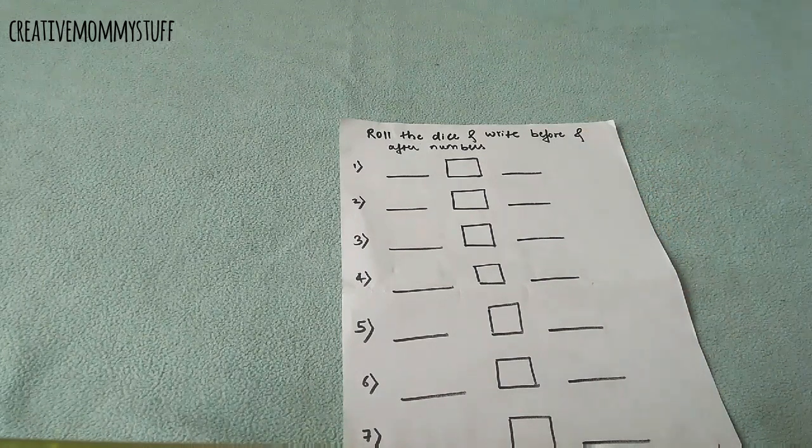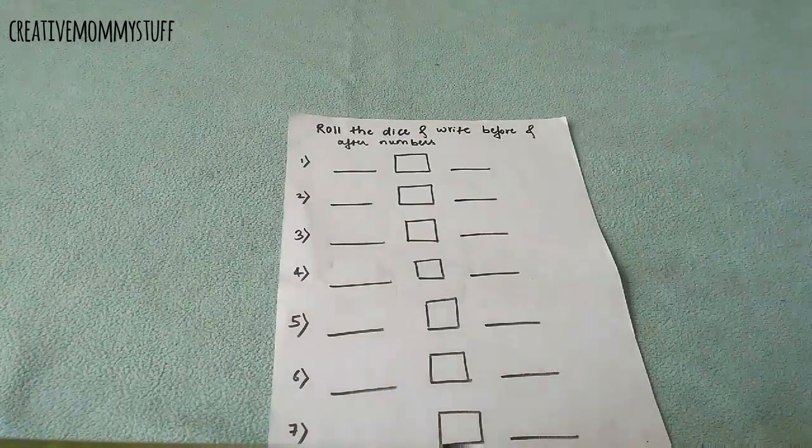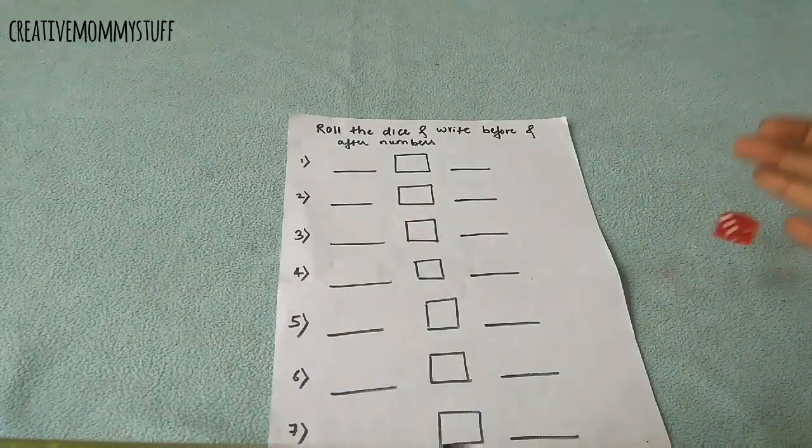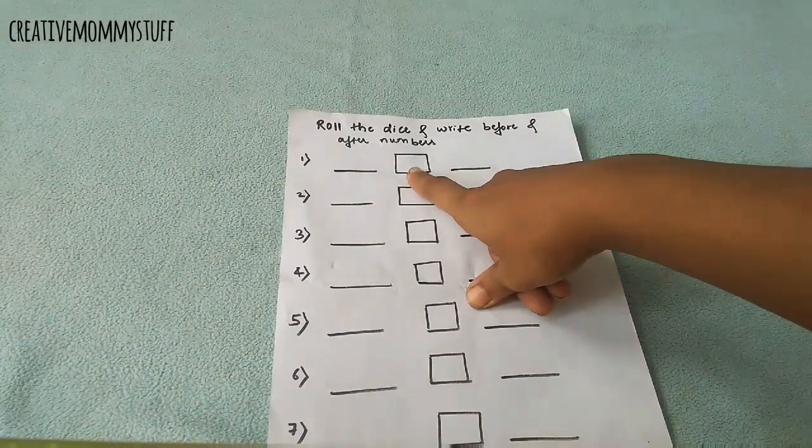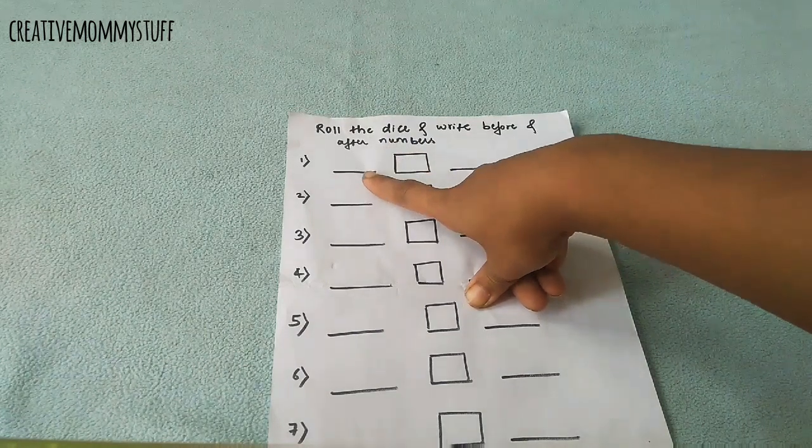This is for before and after numbers. So first we can try with only one dice, like this, four. So she has to write the number here, four, and then she has to write what comes before four and what comes after four.